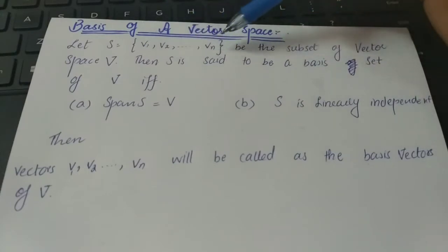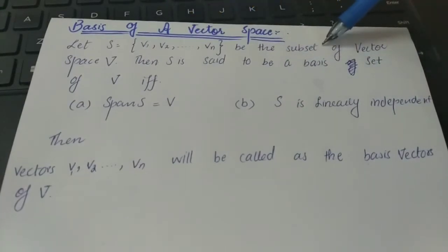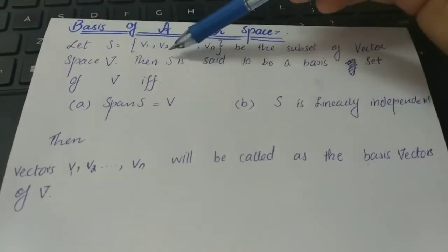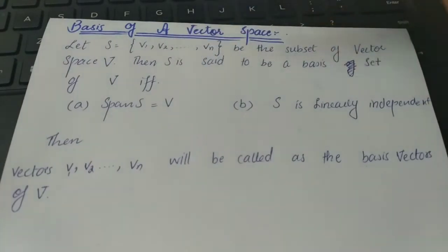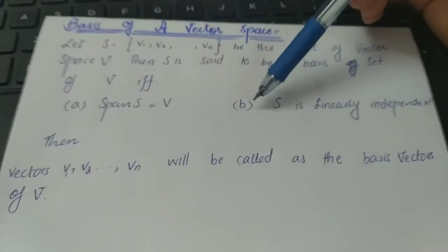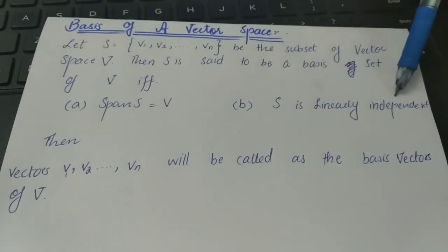If we say that S is a subset of a vector space V, then we will say that S will be a basis set if we have two conditions satisfied. If span S equals V, then the other condition is that S is linearly independent.